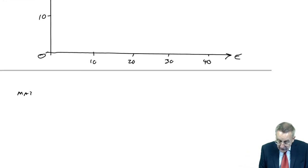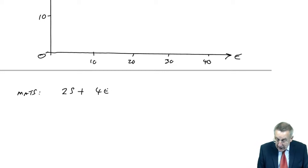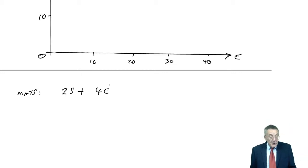If I look at them in turn, first of all, materials. If you look back, if I look at the question, materials, it was 2S plus 4E was what we're using. And it had to be less than or equal to 80.